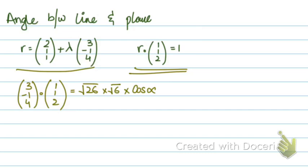We are not finding the angle between the line and the plane first. First, we are finding alpha. You solve this entire thing, and in this example, alpha turns out to be 36.8 degrees.